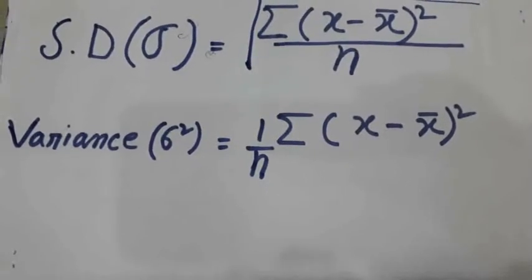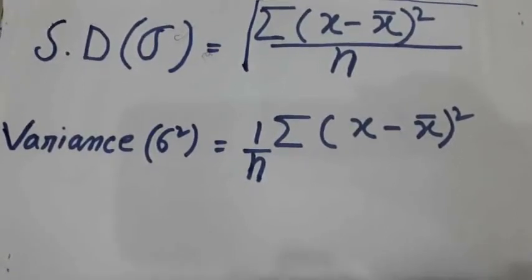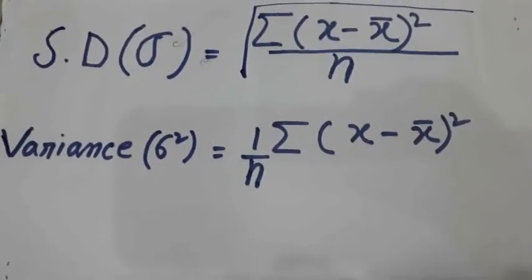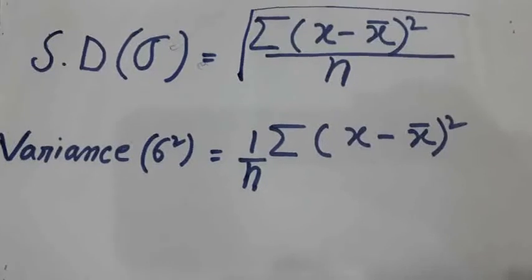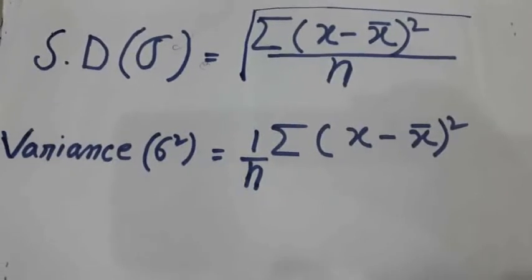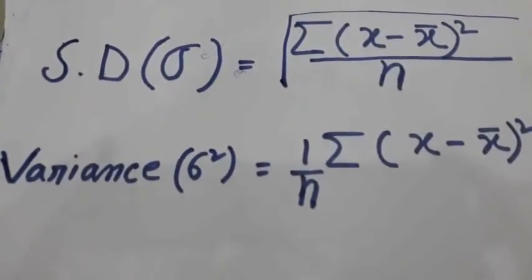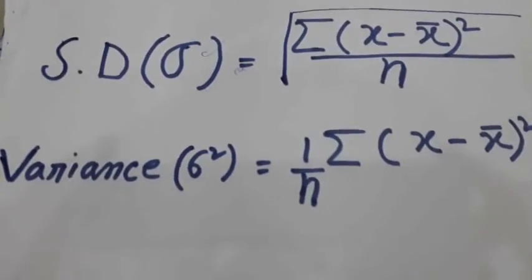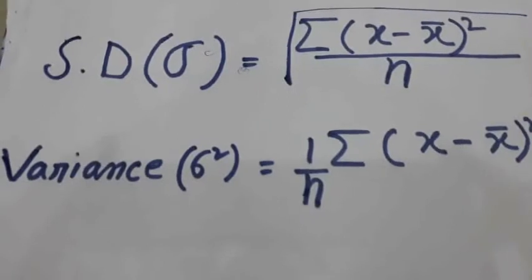It means variance equals to 1 by n summation x minus x bar whole square. This standard deviation measures how each and every value differs from the central value or the mean.